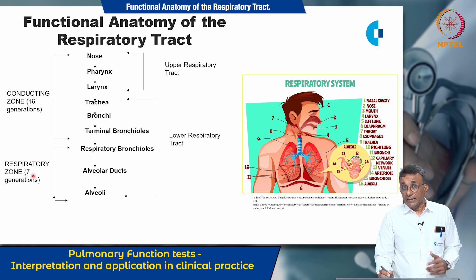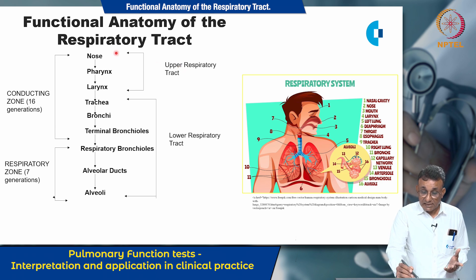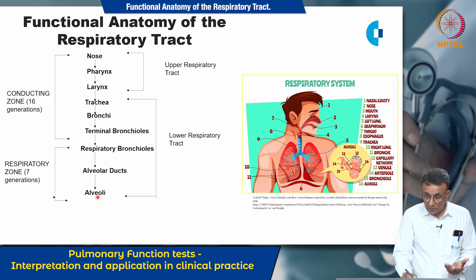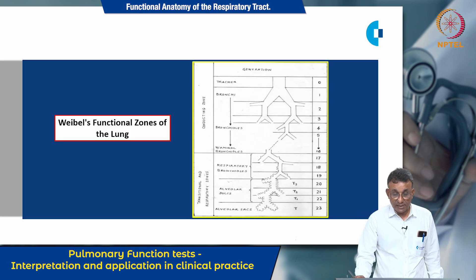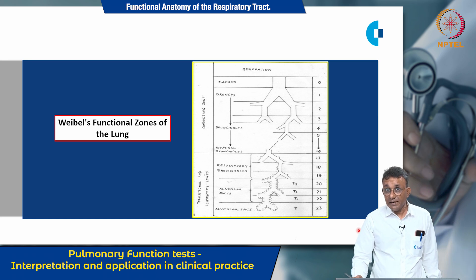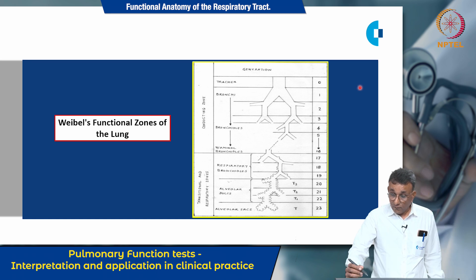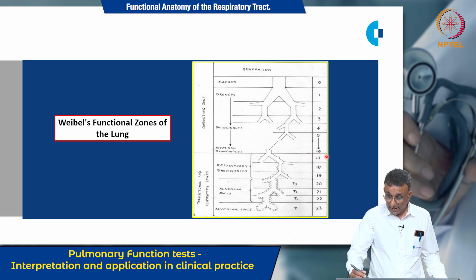Clinicians describe the respiratory tract as an upper respiratory tract, which extends from the nose up to the larynx, or a lower respiratory tract, which extends from the trachea up to the alveoli. This diagram is a diagrammatic representation of Weibel's functional zones of the lungs, described in 1963, showing the conducting zone with branching up to the first 16 generations and the respiratory zone in the last 7 generations.